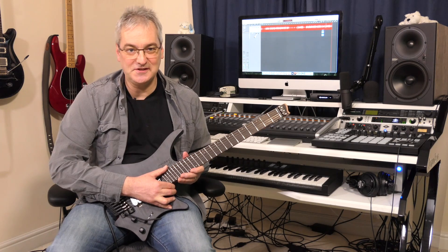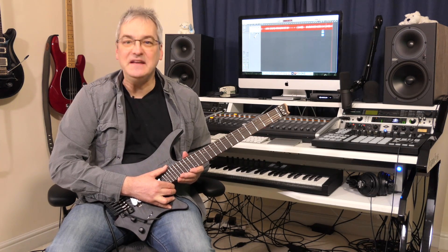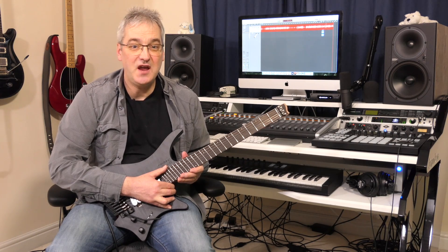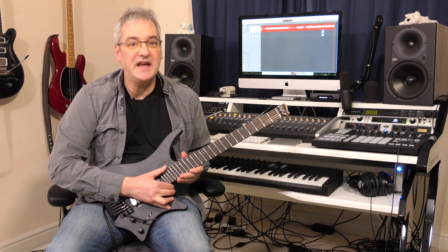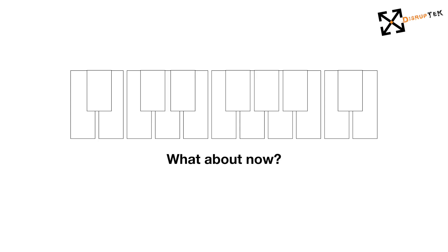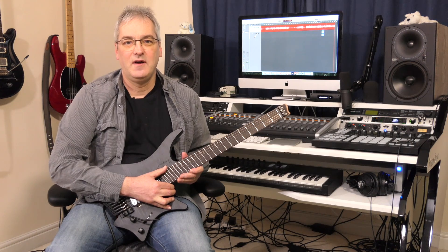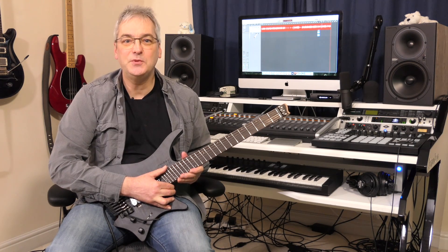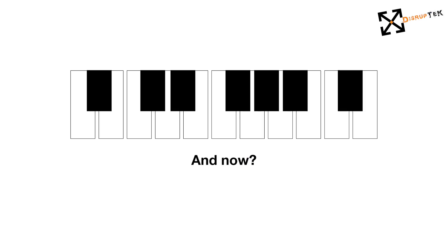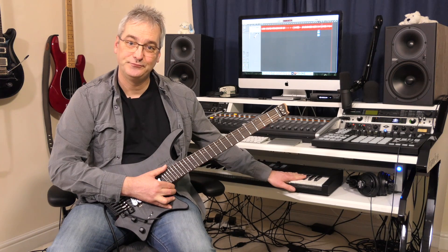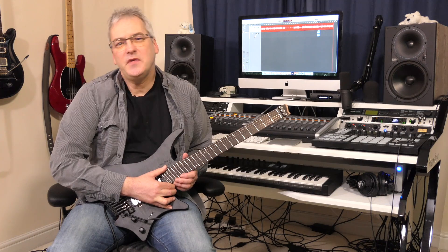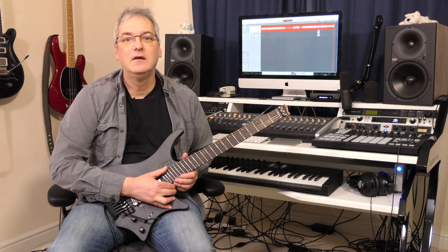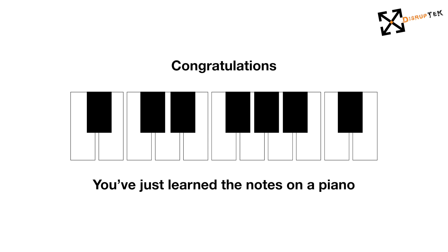So now you know all of the notes — we now need to learn how to find them. If I now remove the notes, does the shape left behind remind you of anything? If I change the shape ever so slightly, does that help? What if I make the colour of the in-between notes black? If you haven't got it by now, you never will. The piano keyboard — it's designed around the notes used in modern music. So without realising it, on your journey to learn guitar theory, you have already learned the notes on a piano.